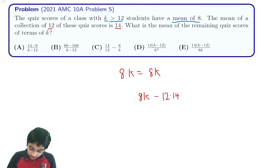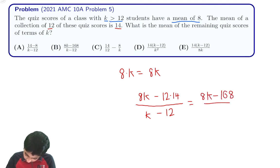And then what are the remaining students? How many total remaining students are there? Well, there's going to be k total students, 12 of them got an average score of 14. So we subtract to get k minus 12. We simplify this out. We get 8k minus 168 over k minus 12, which is B.